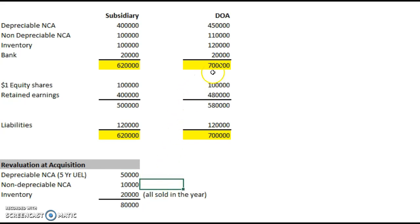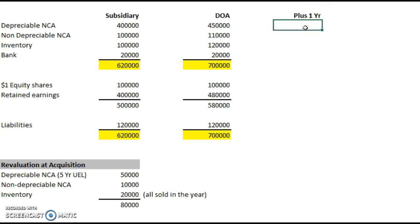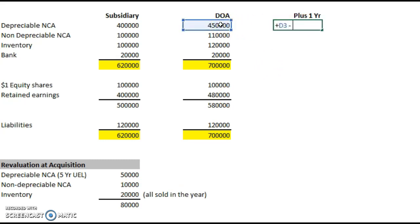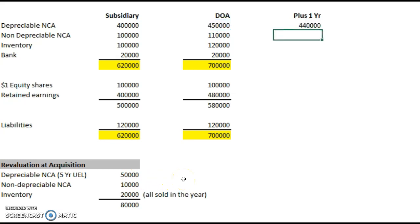So it does have an impact. Let's move forward one year and see what would have happened, because some of these assets have a timed component. For example, the depreciable non-current assets had a five-year life, so every year this adjustment will depreciate by one-fifth, or 20%, over its five-year life. We reduce this figure by one-fifth of the depreciated adjustment — that takes us down by 10,000, from 450,000 to 440,000 at the end of one year.